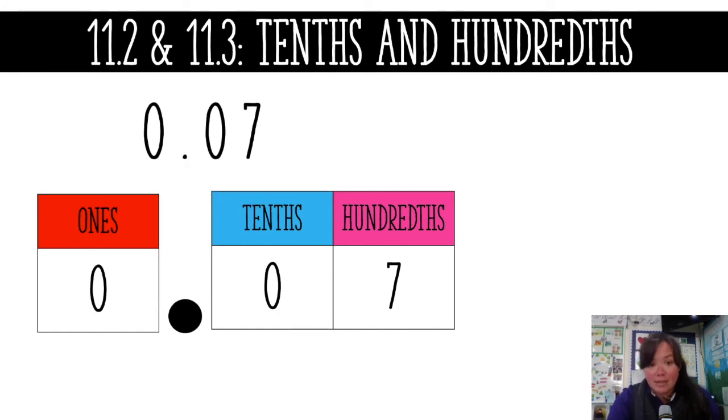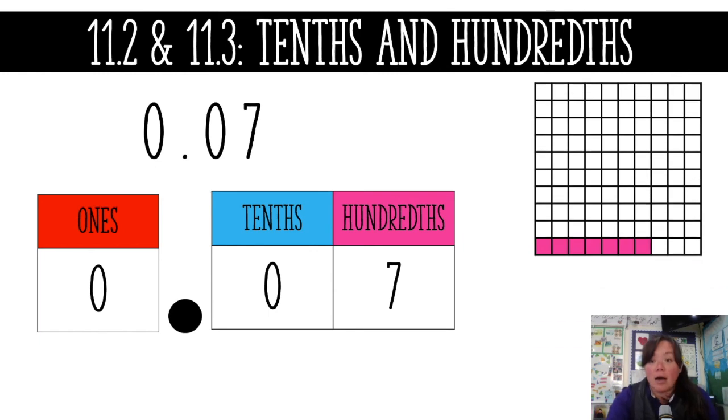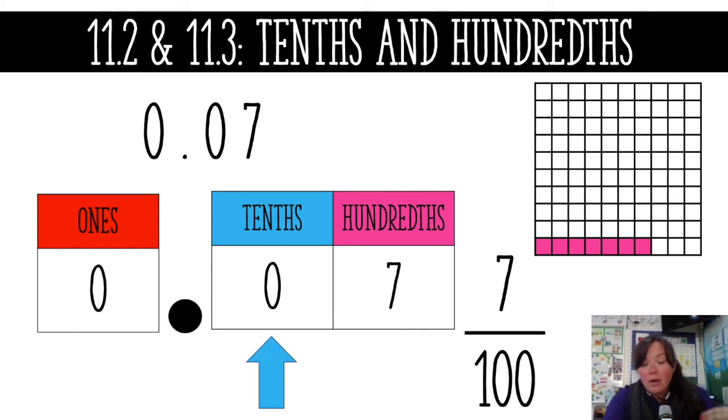So the way you would write this number is zero point zero seven. The model looks like this: seven squares, I don't even have a full row colored, only seven squares. And my fraction is seven out of a hundred.